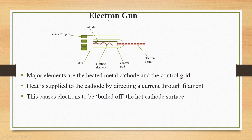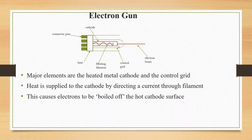Another important part to examine in detail is the Electron Gun. The major elements of the Electron Gun are the heated metal cathode and the control grid. This rectangle represents the heated metal cathode.